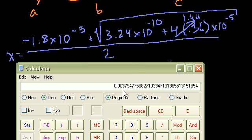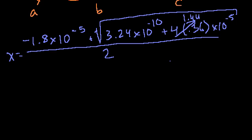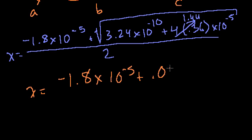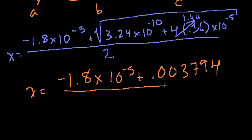So I'll switch colors. So I get x is equal to minus 1.8 times 10 to the minus 5. Plus 0.003794. All of that over 2.